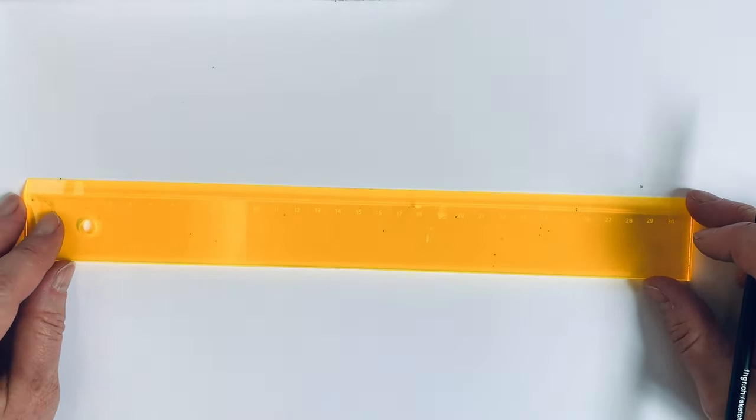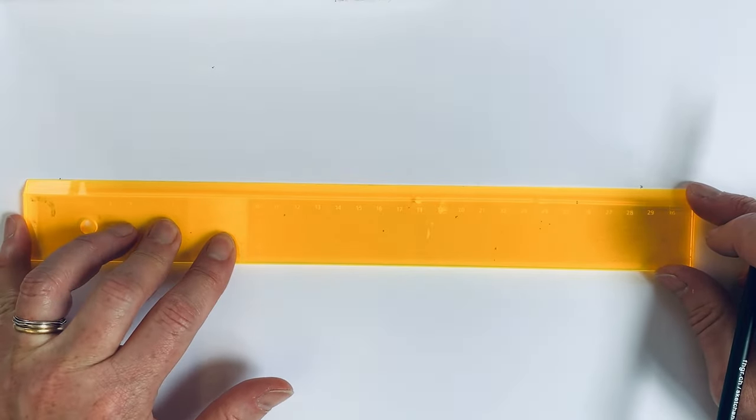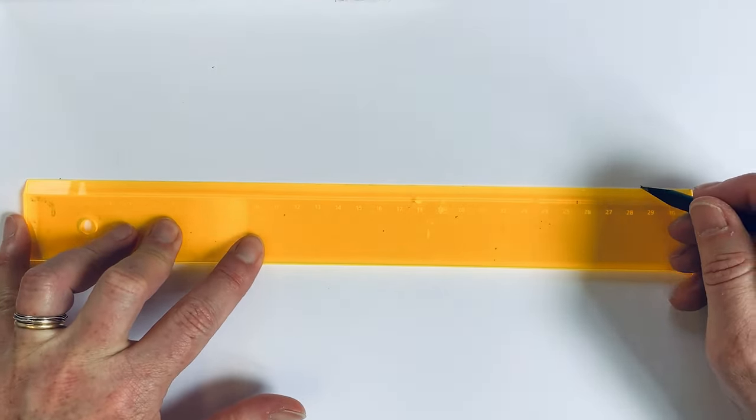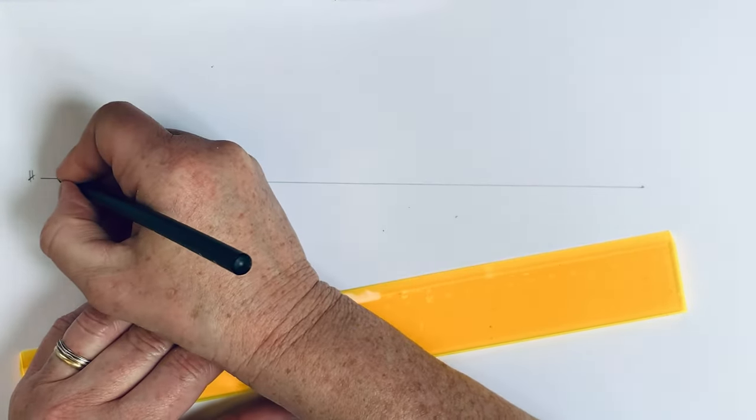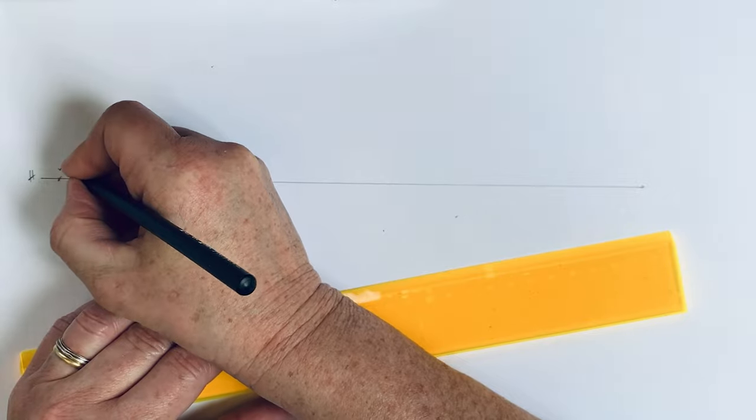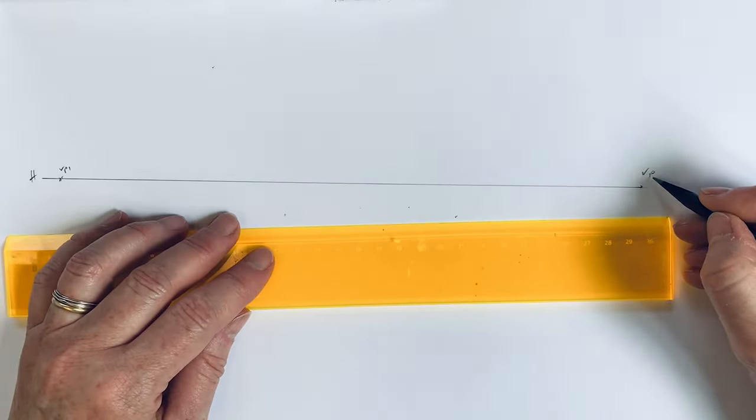I start with the horizon, like we always do. A straight line called horizon with a vanishing point here and a vanishing point here.